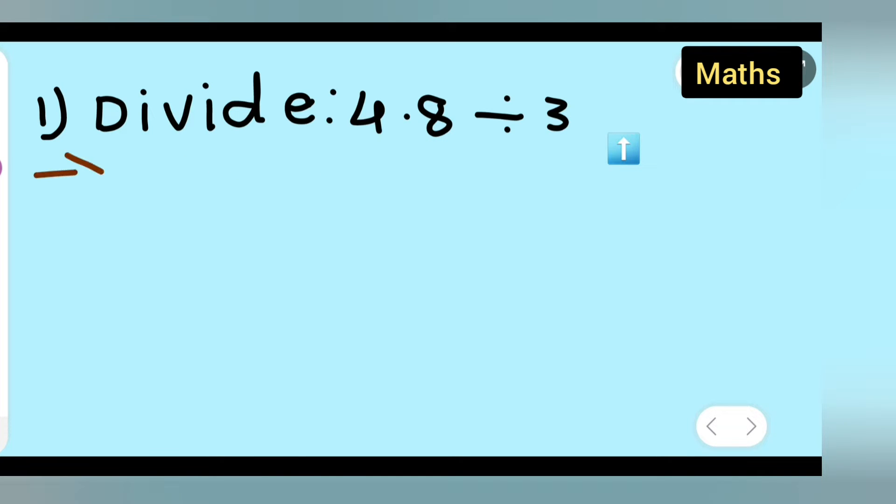Let's divide this. There are basically two methods we can use for 4.8 divided by 3. Let me use method 1.